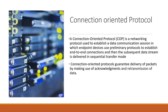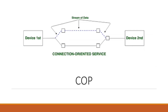Whenever a computer wants to communicate with another computer, the communication between those two computers needs to be reliable, so it can guarantee that the data is being received correctly. This is the structure of connection-oriented protocol — the sender end and the receiver end, with data being transferred from sender to receiver as a stream.